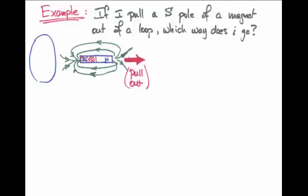Faraday's law of induction says that there should be a voltage produced in the loop, and that should therefore introduce a current in the loop, an induced current. The question now is, if we're trying to pull that south pole out of the loop, in which direction will the current flow?